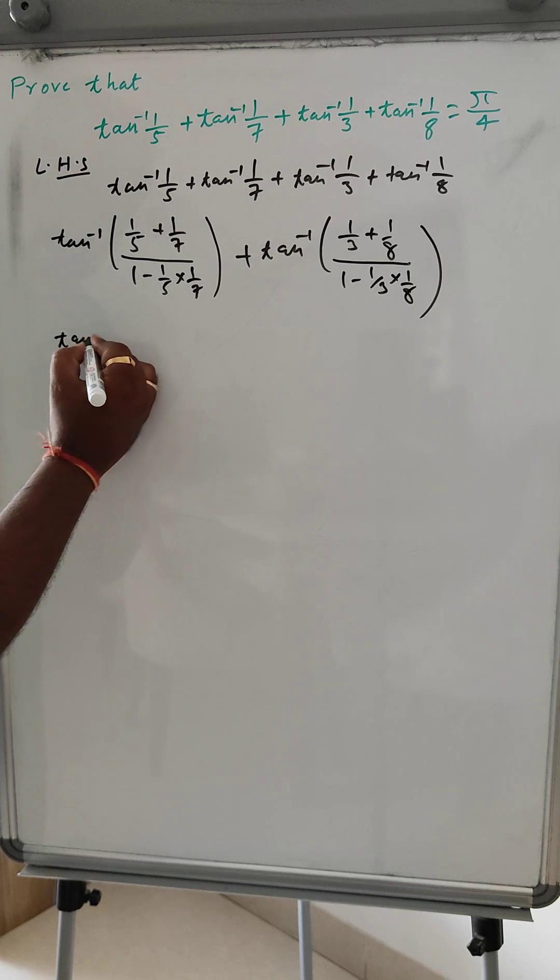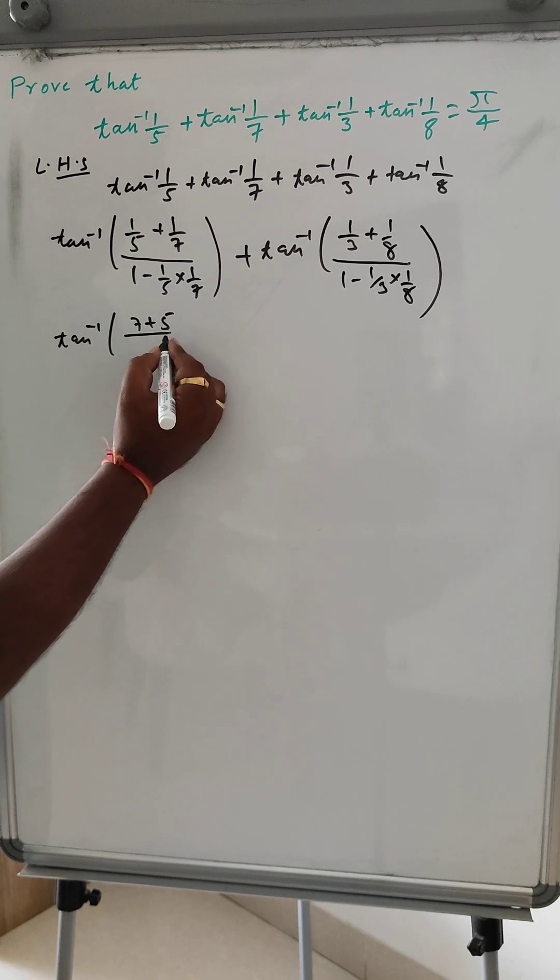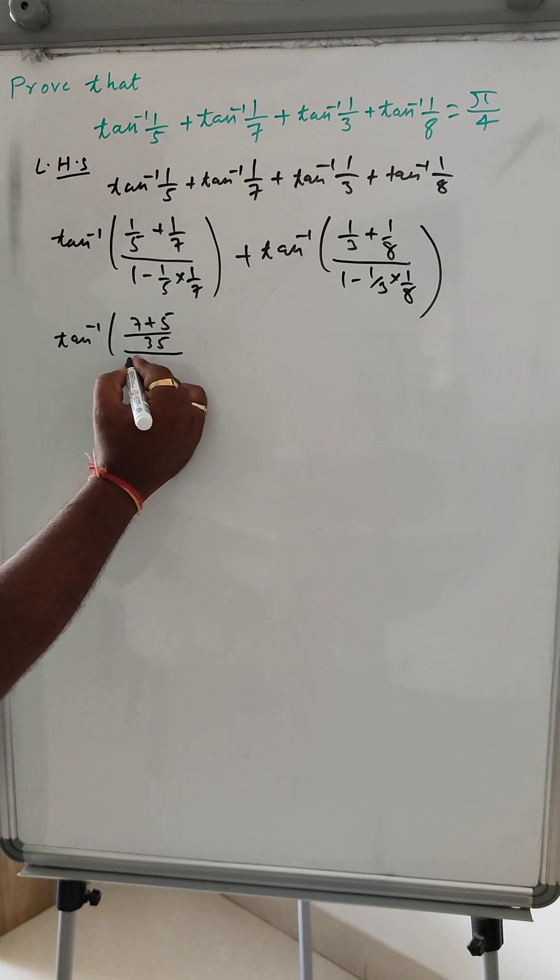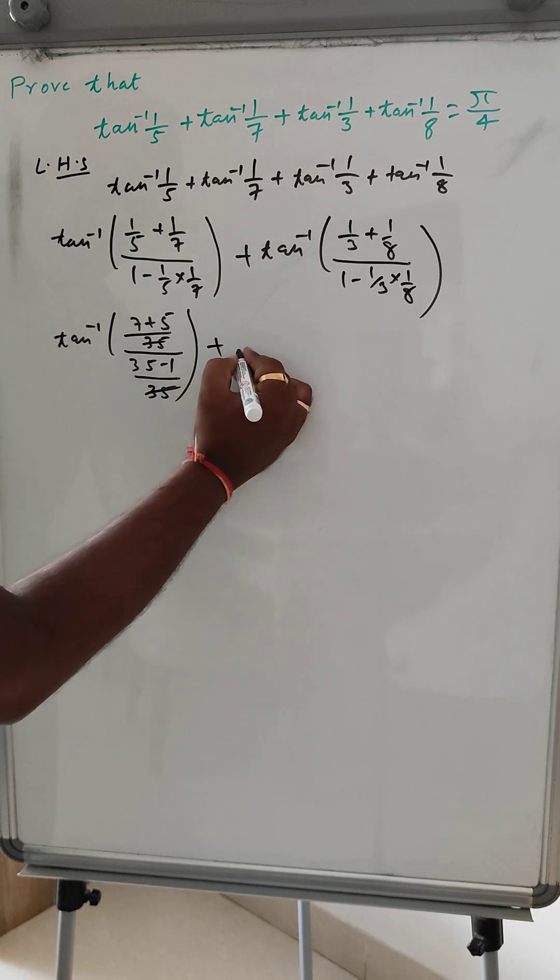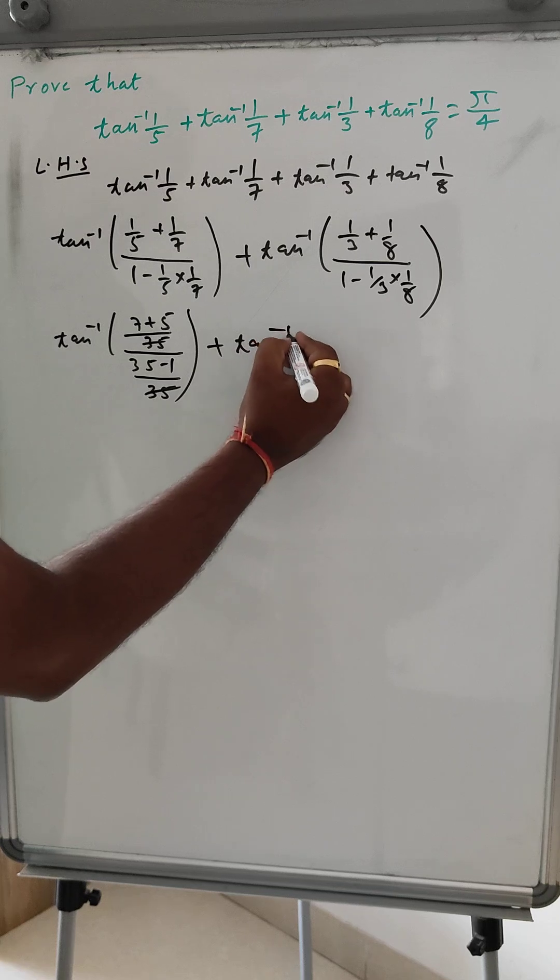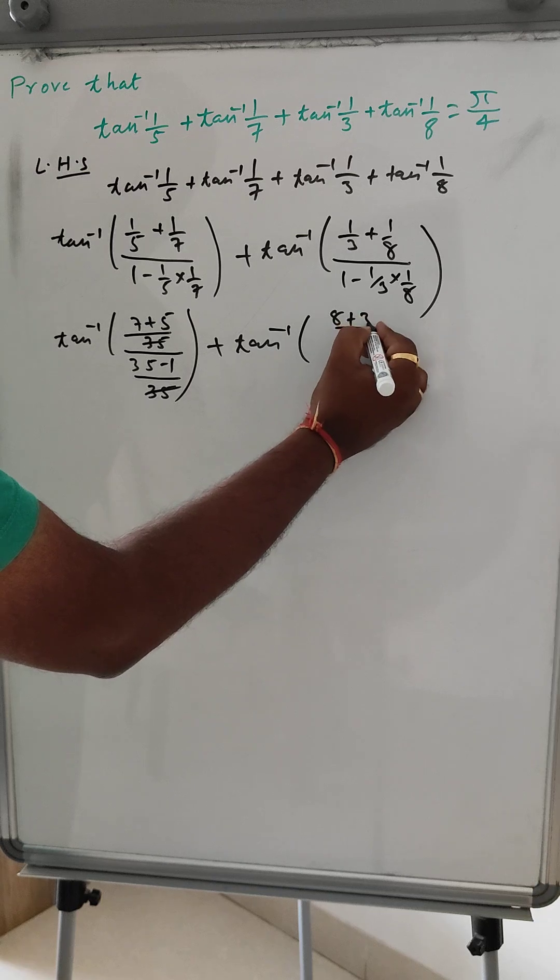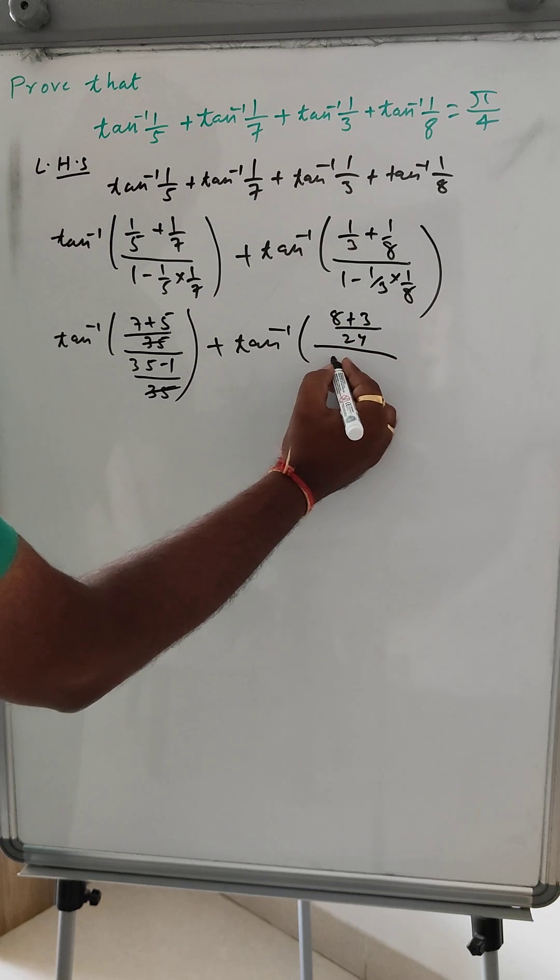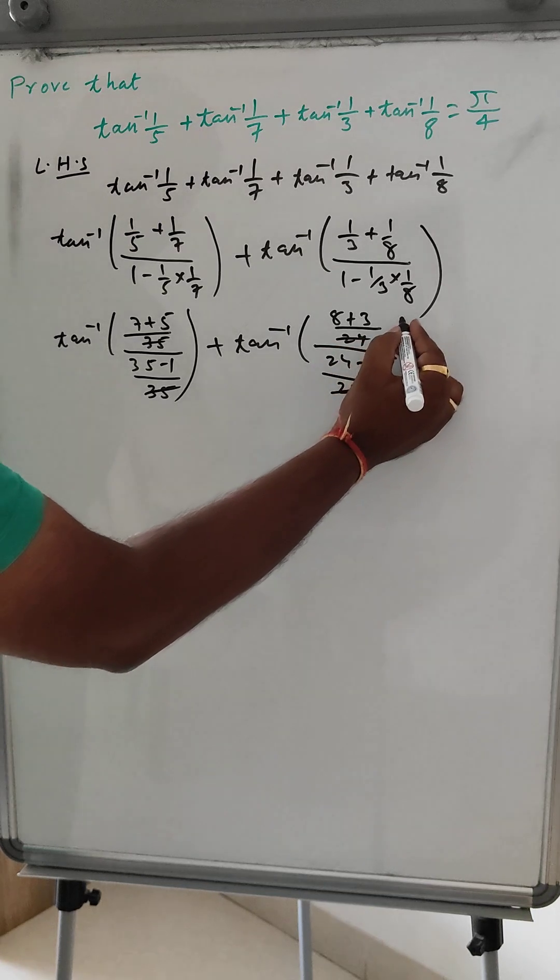So tan inverse we can write like 7 plus 5 divided by 5 and 35 minus 1 divided by 35. So this 25, 25 cancelled, this tan inverse, this is 24 plus 8 plus 3 and this is 24 minus 1 and 24, 24 cancelled.